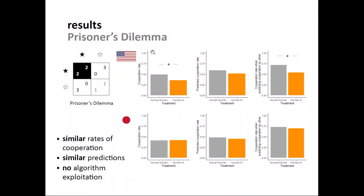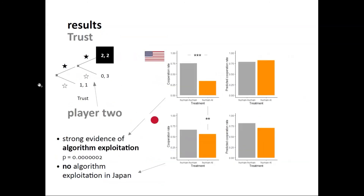Here's what we found from these latest studies. At the top you see the Prisoner's Dilemma results I already showed you — cooperation rates, predicted cooperation, and cooperation rate when expecting the other to cooperate — for both USA and Japan. There are similar rates of cooperation and prediction across both countries with one exception: there is no algorithm exploitation in Japan. People do not exploit artificial agents in Japan, whereas they do exploit them in the USA.